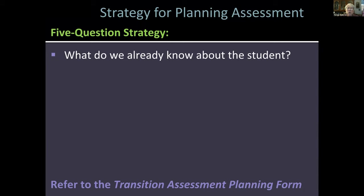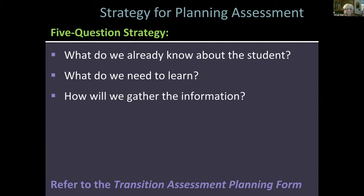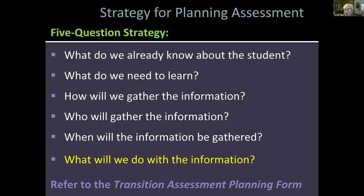I'm going to share what we call a five-question strategy — and I've added a sixth question. What do we already know about the student in relation to a particular transition area, like transportation or making lunch? What do we need to learn? How are we going to gather that information — how are we going to assess it? Who's going to do it? When will the information be gathered? And my added question: what are we going to do with that information? That's what I'm going to answer for the rest of the presentation.